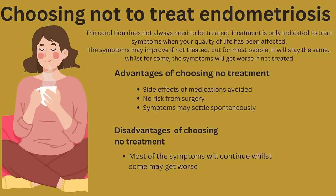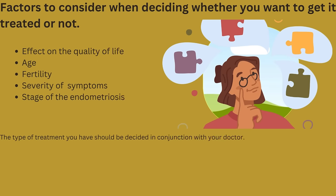Choosing not to treat endometriosis: The condition does not always need to be treated — treatment is only indicated when quality of life has been affected. The symptoms may improve if not treated, but for most people they will stay the same, while for some the symptoms will get worse. Advantages of choosing no treatment: side effects of medications are avoided, there is no risk from surgery, and symptoms may settle spontaneously. Disadvantages: most symptoms will continue and some may worsen. Factors to consider include effect on quality of life, age, fertility status, severity of symptoms, and stage of endometriosis. The type of treatment should be decided in conjunction with your doctor.